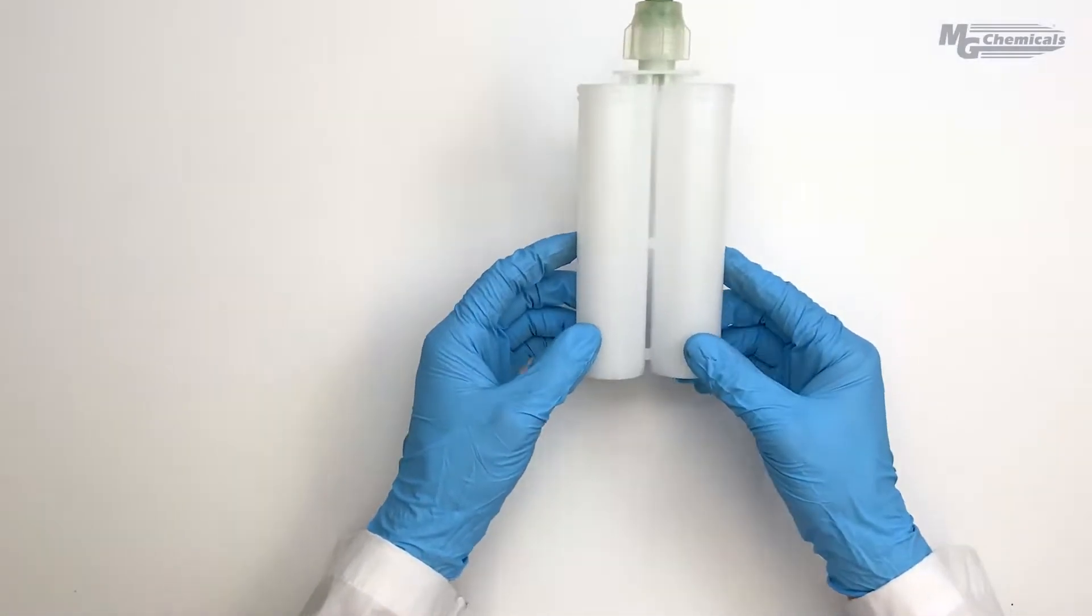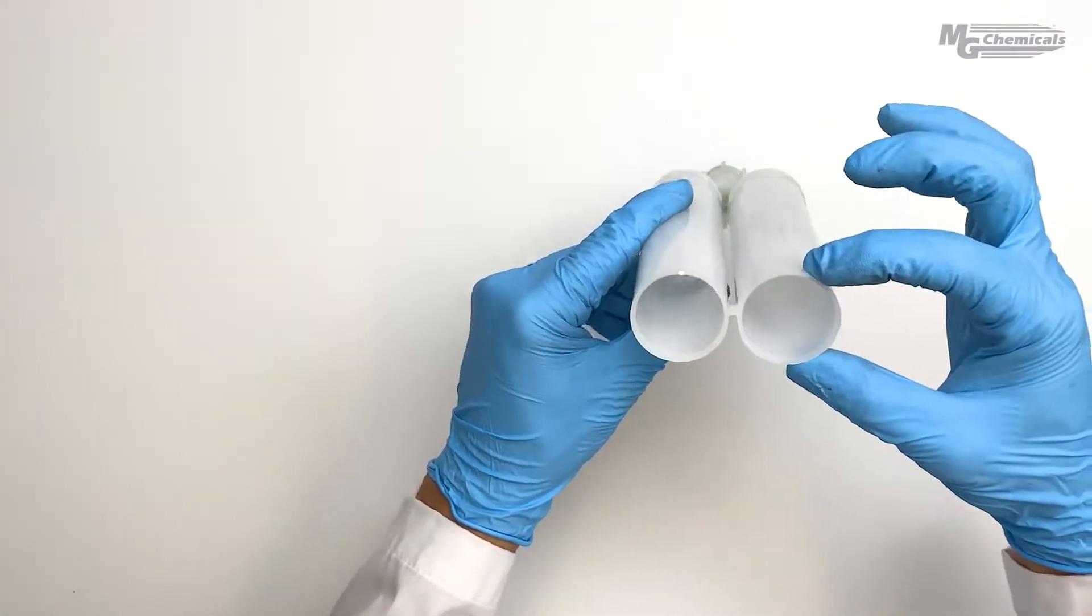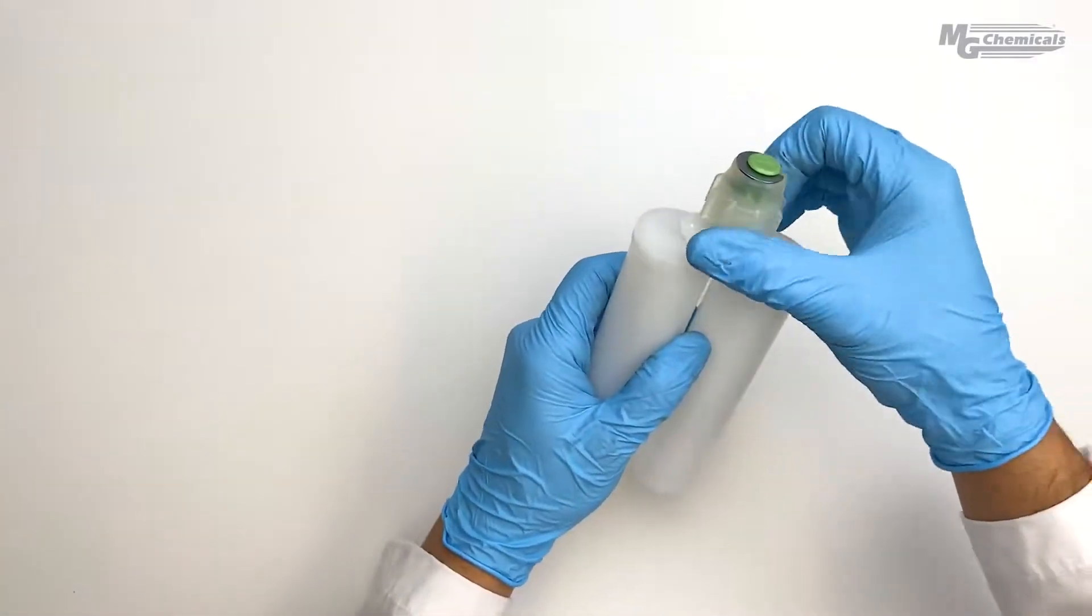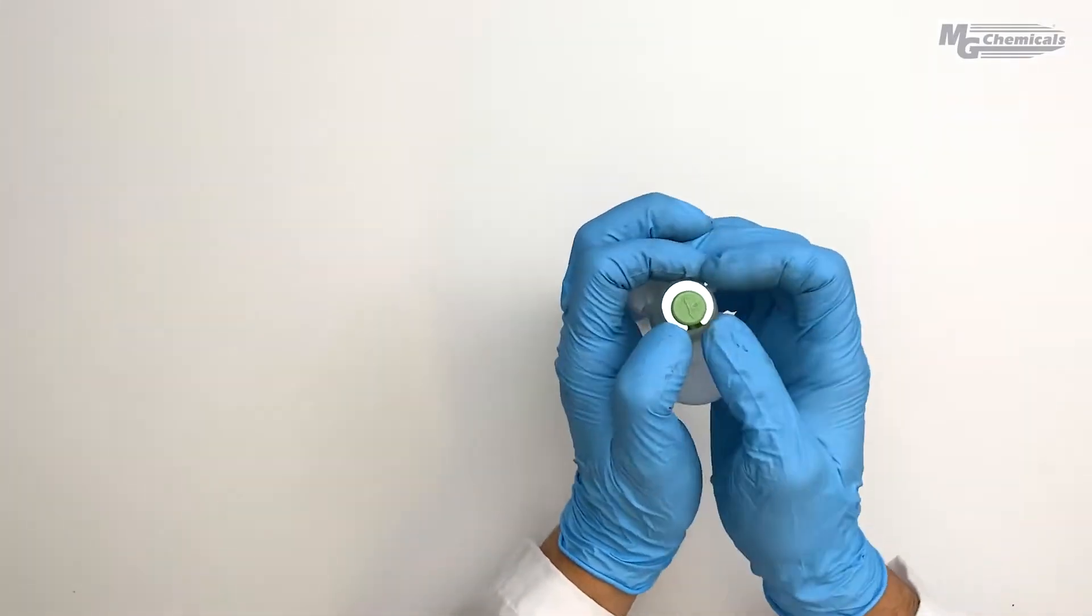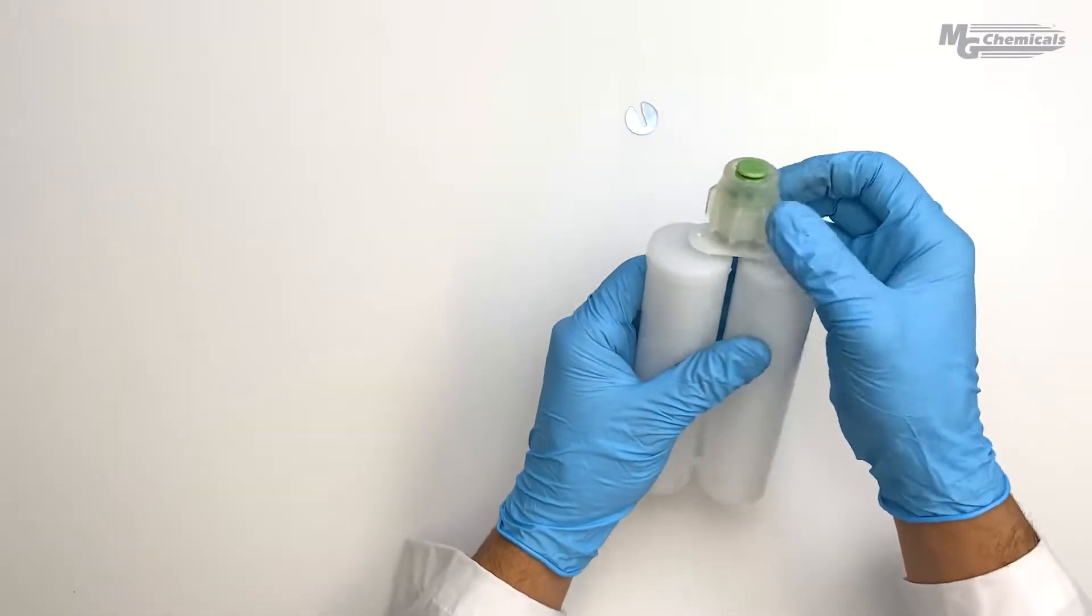Our largest size for one-to-one cartridge is the 400 ml. To use this, we first must remove the metal pin at the top, unscrew the cap, and remove the plug to open the nozzle.